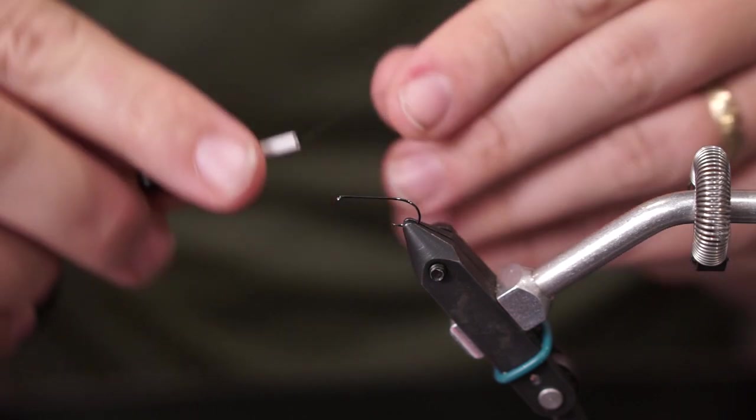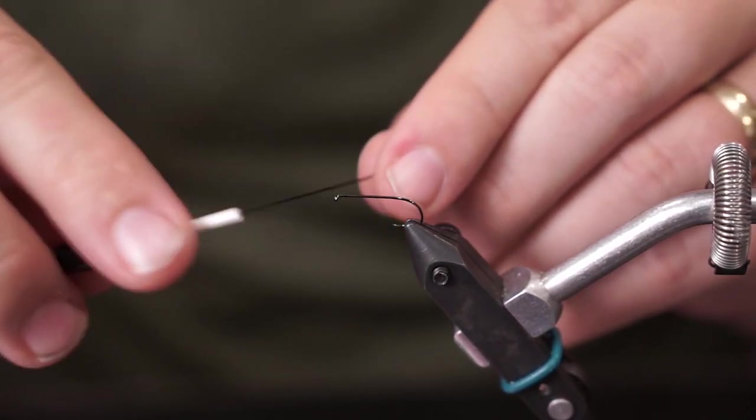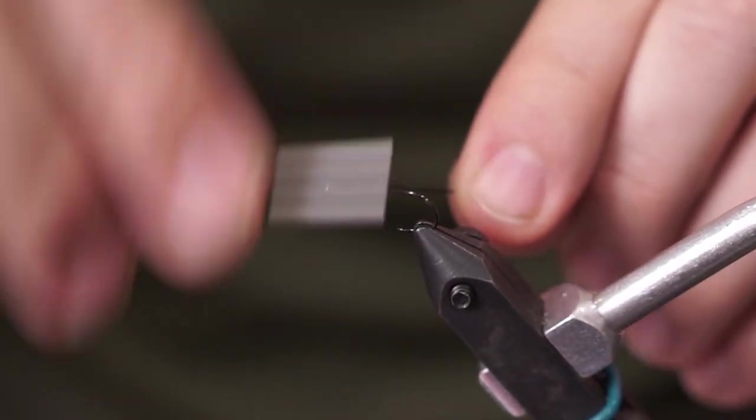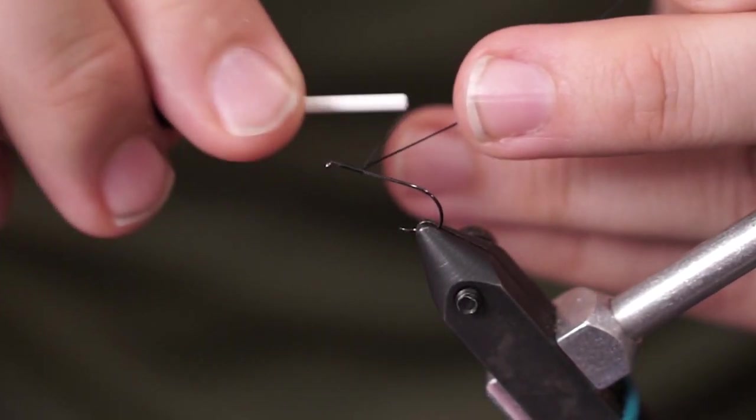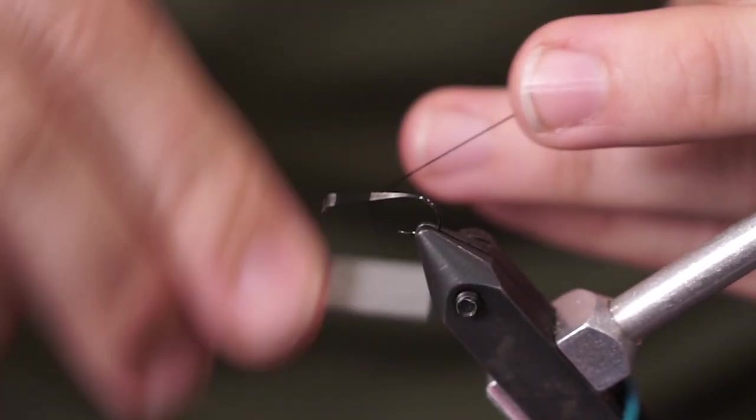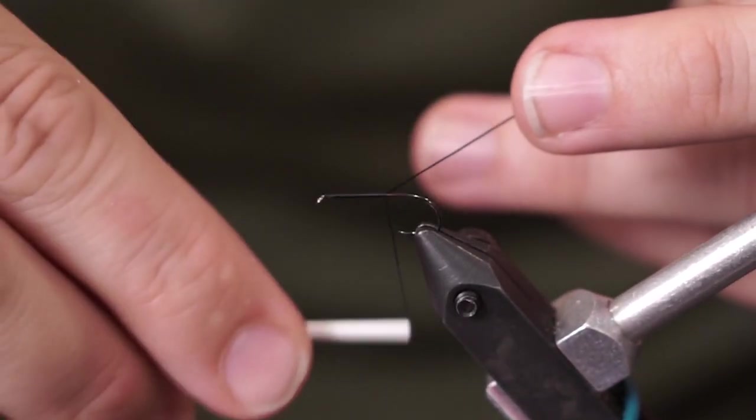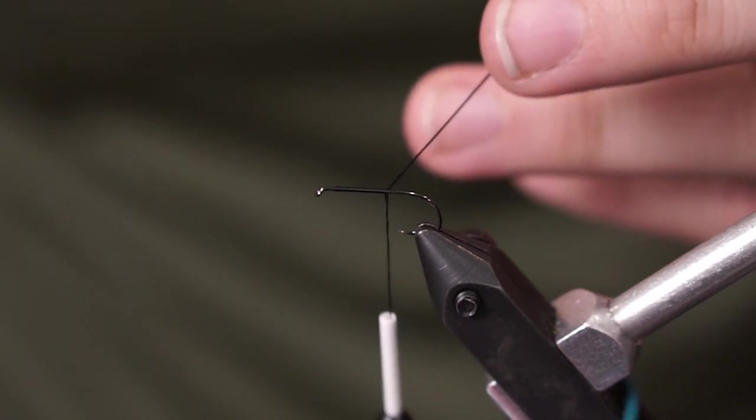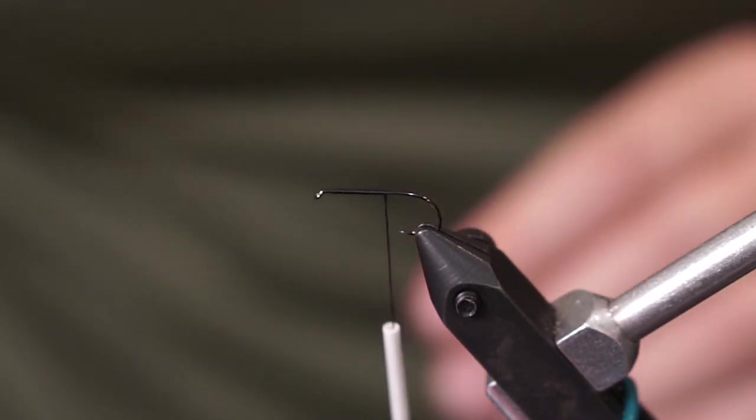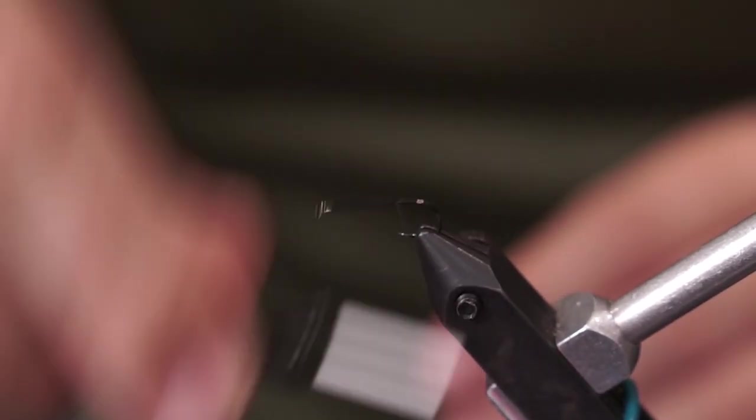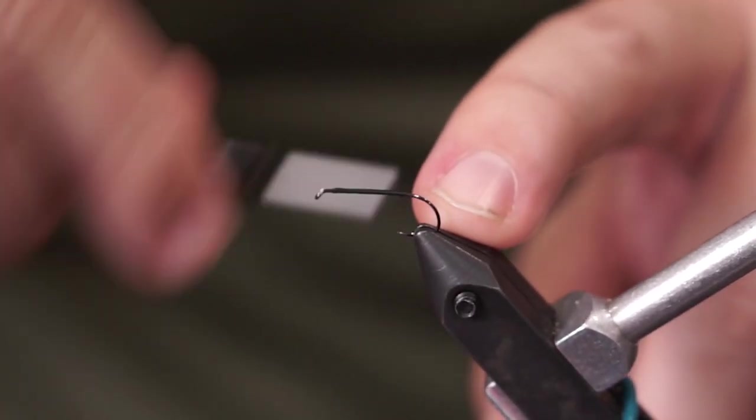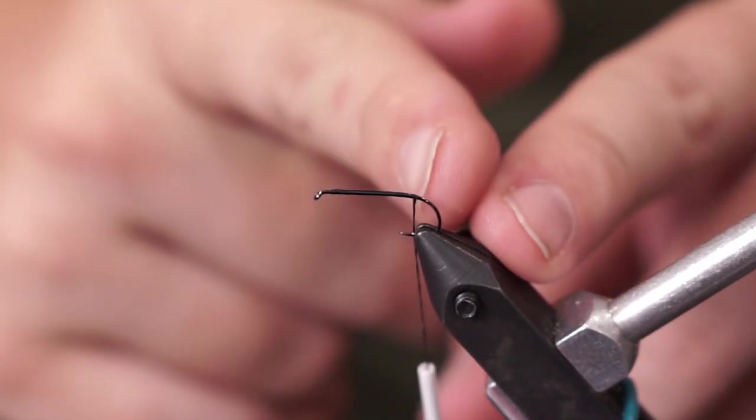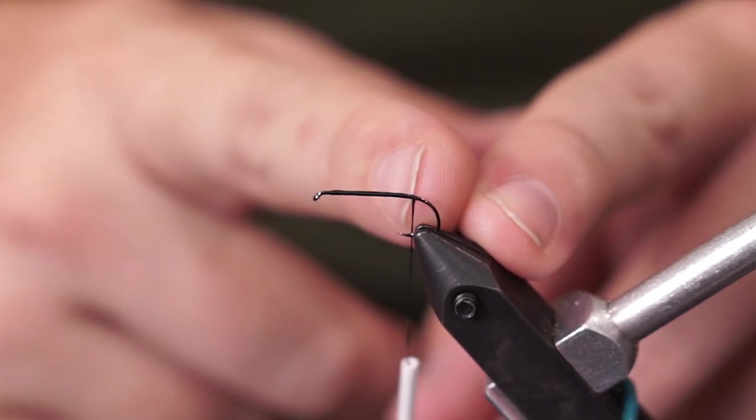Okay so to get started as always we want to lay our thread base. So we're going to go ahead and start bringing our thread back and as we've done before by holding our thread at an angle it allows us to place one wrap next to another. So we come back maybe three quarters of the way and we go ahead and we cut our thread. After cutting our thread we continue to wrap back to where that barb of the hook should be. Now again we've crushed our barb but that's about the same place as the end of this hook shank.